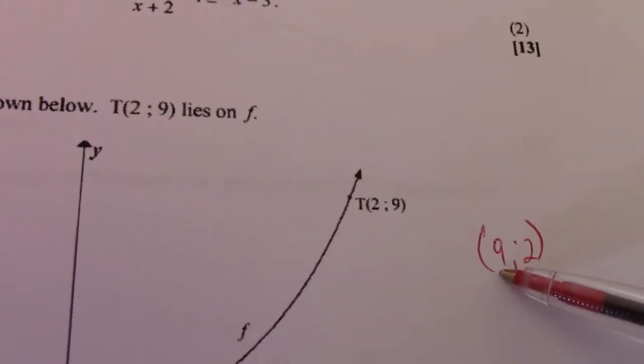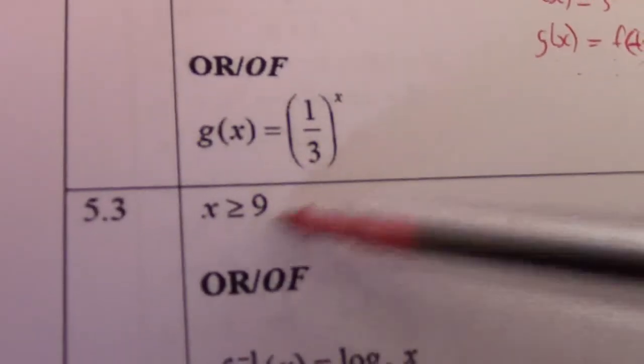So where is the inverse function greater or equal to 2? When x equals 9. So there my answer is simply x greater or equal to 9. If that is the case, as you can see, then it's equal to 2.